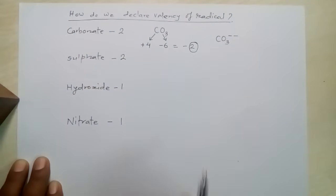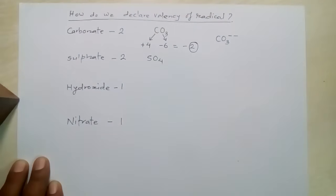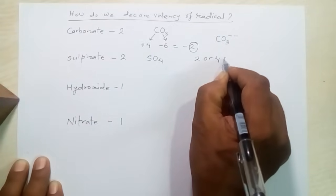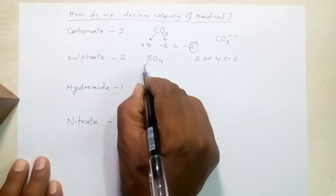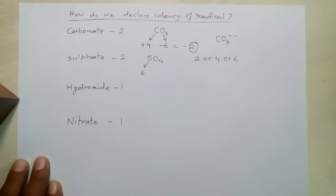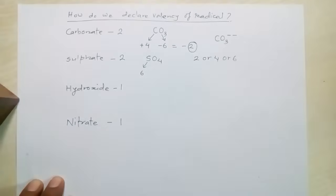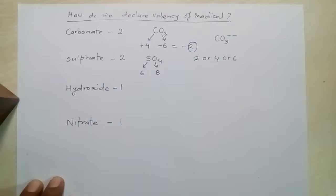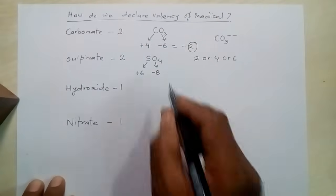Now let's look at sulfate. The formula of sulfate is SO₄. The valency of sulfur at this time is 6, and the valency of oxygen is 2. There are 4 atoms of oxygen, so the total valency from oxygen is 8. Sulfur is electropositive and oxygen is electronegative.